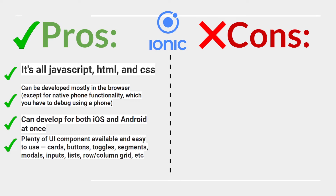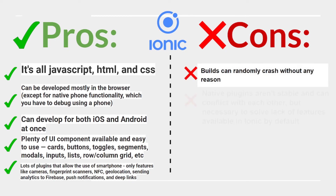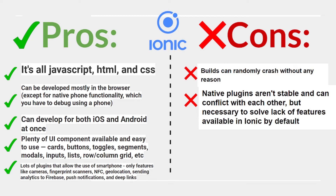Ionic also offers plenty of UI components — cards, buttons, toggles, segments, modals, inputs, list rows, column grids, and more — plus many plugins that enable smartphone-only features like cameras, fingerprint scanners, NFC, geolocation, Firebase analytics, push notifications, and deep links. Cons: builds can randomly crash without reason, and native plugins aren't stable and can conflict with each other.